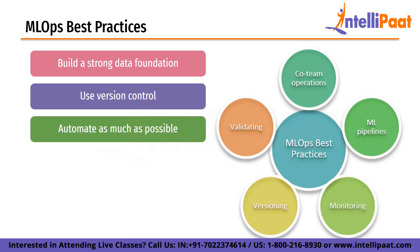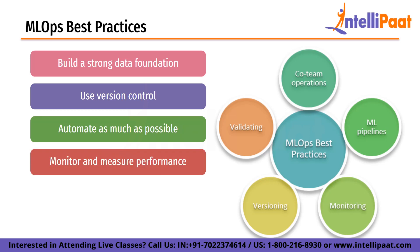Automate as much as possible — automation is the key to streamlining the ML development lifecycle and reducing the risk of human error. By automating tasks such as data preprocessing, model training and deployment, organizations can accelerate their ML operations and improve their overall efficiency. The next best practice is to monitor and measure performance. Continuous monitoring and measurement of model performance is essential for ensuring that ML models are operating as intended and delivering value to the organization. This requires implementing a monitoring framework that tracks key metrics such as accuracy, latency and throughput and provides alerts when performance falls outside of acceptable ranges.